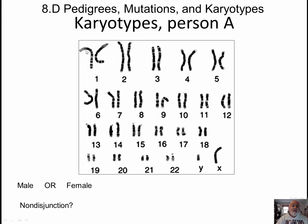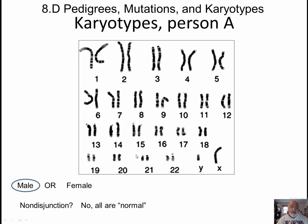Here's a karyotype. Look at it and see if everything looks the way it's supposed to. Don't worry about the different shape of the chromosomes — it's more the length and the lining up of the bands. Is this male or female? We look at the last pair — looks like we have one of each sex chromosome. So this is a male. Do they all look normal? I think they do. There's no non-disjunction. So this is a normal male.